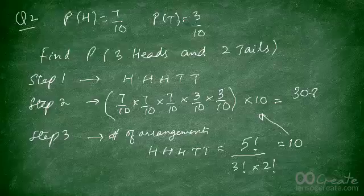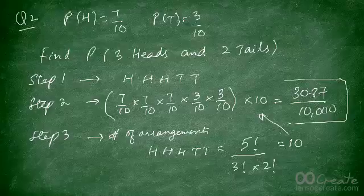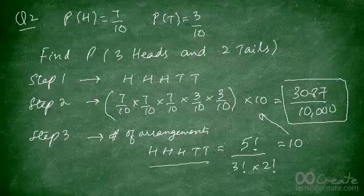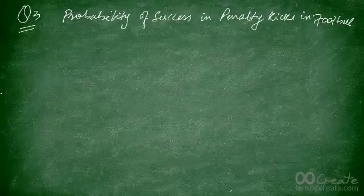We multiply the answer from step two by 10, and the entire calculation simplifies to 3087 upon 10,000. Since the order was not specified, we had to figure out all the different ways this could happen and multiply by the number of possible arrangements of three heads and two tails.